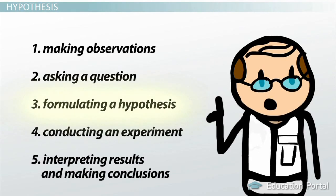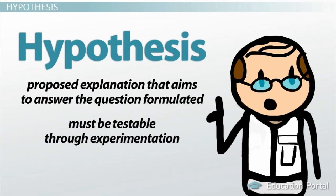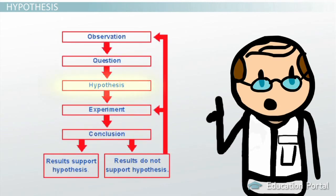The third step is to formulate a hypothesis. A hypothesis is a proposed explanation that aims to answer the question formulated, and the hypothesis must be testable through experimentation. The development of a hypothesis is a very important step in the scientific method, because it is what the remaining steps are based on, and it will be returned to after more steps are completed.